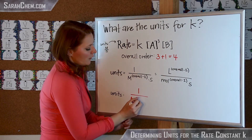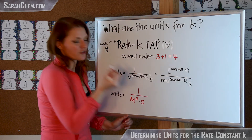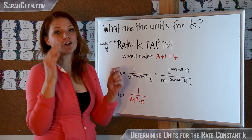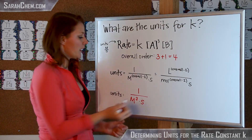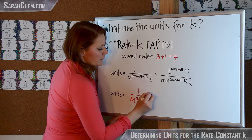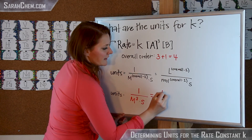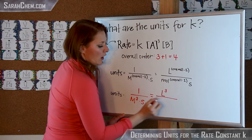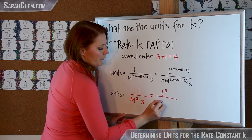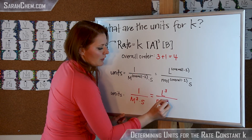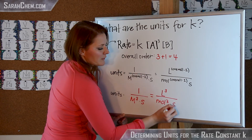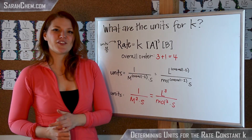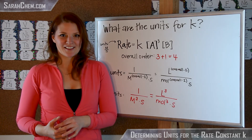And then the seconds are just going to be seconds — the time unit is always in your units for K. This could also be written as liters to the third, so the overall minus 1, all over moles to the third times seconds. So that's pretty much what you need to know to figure out those units for K.